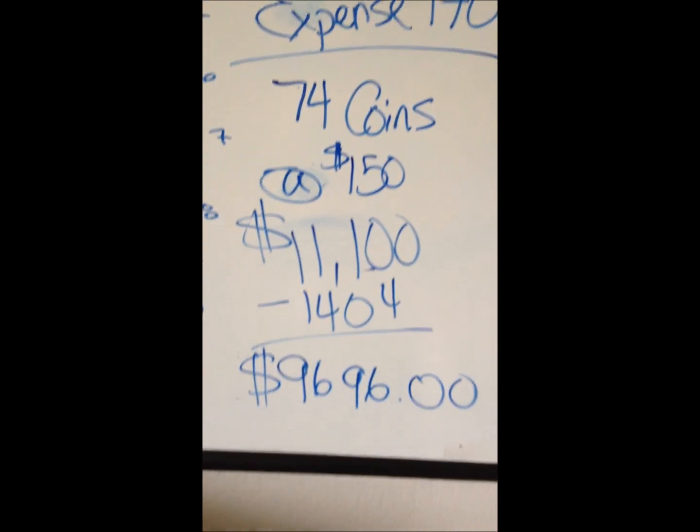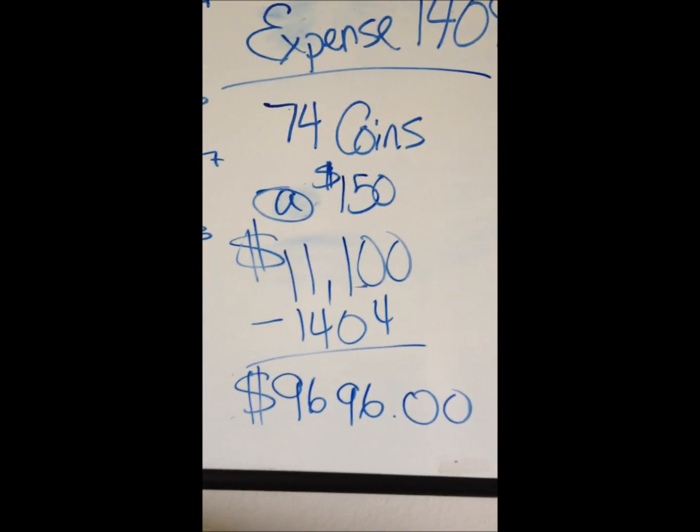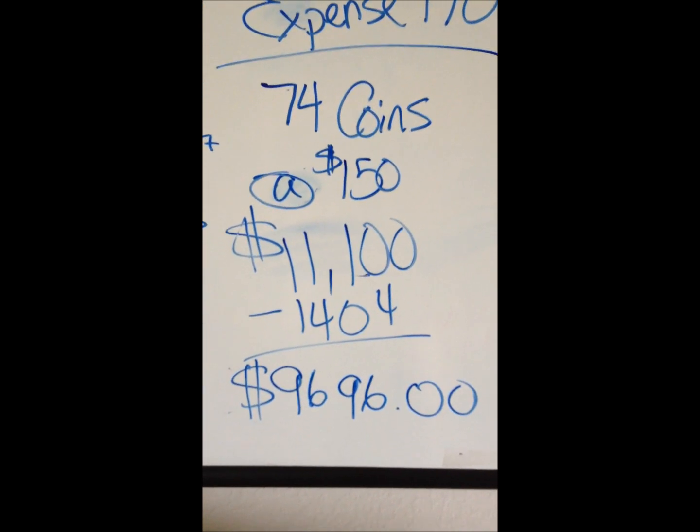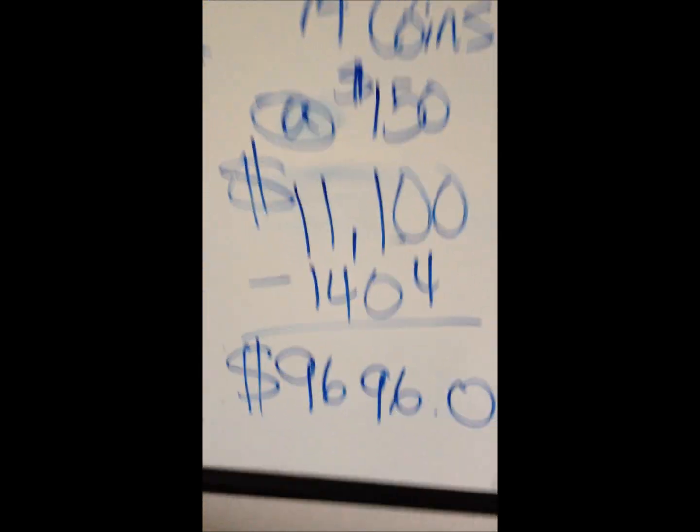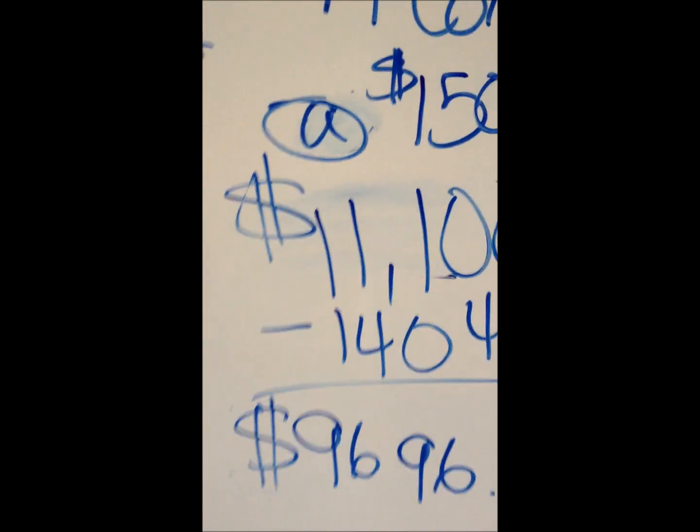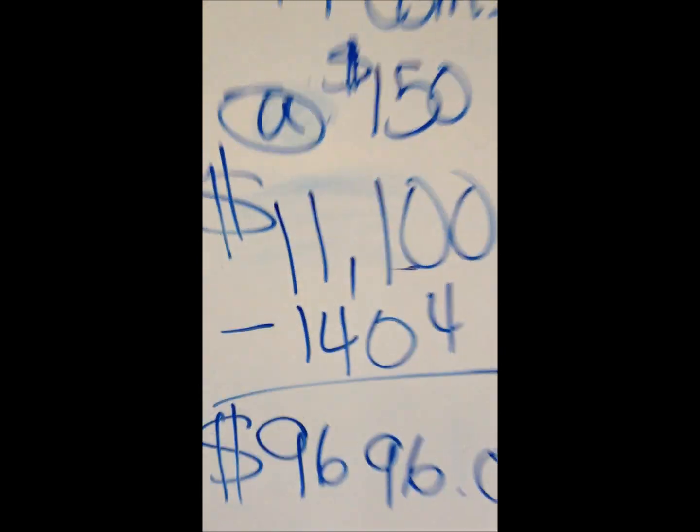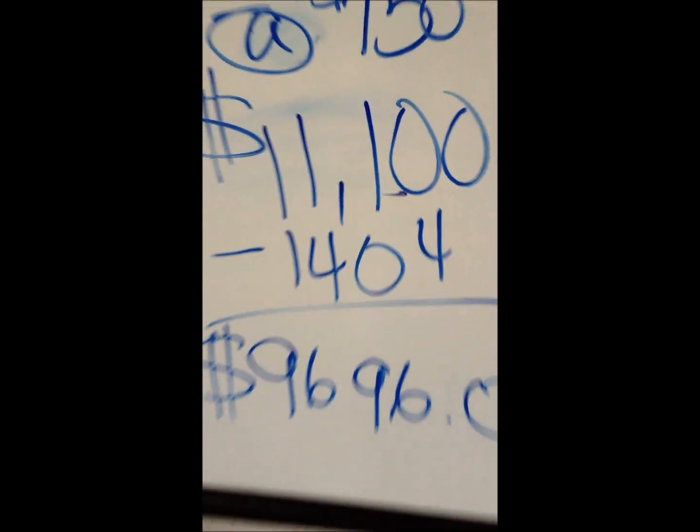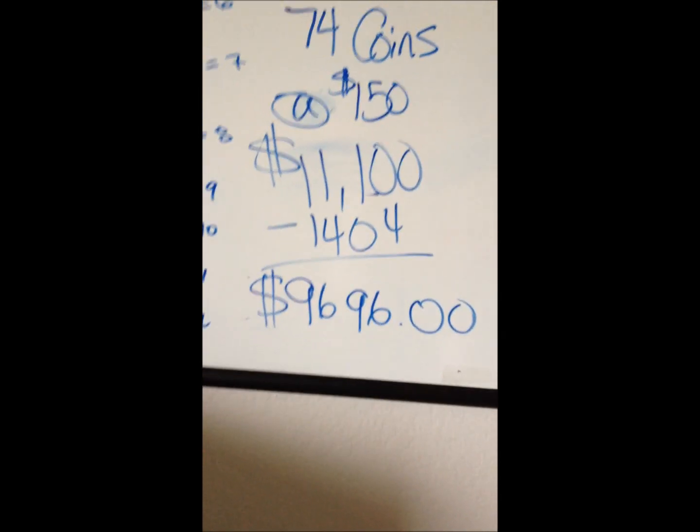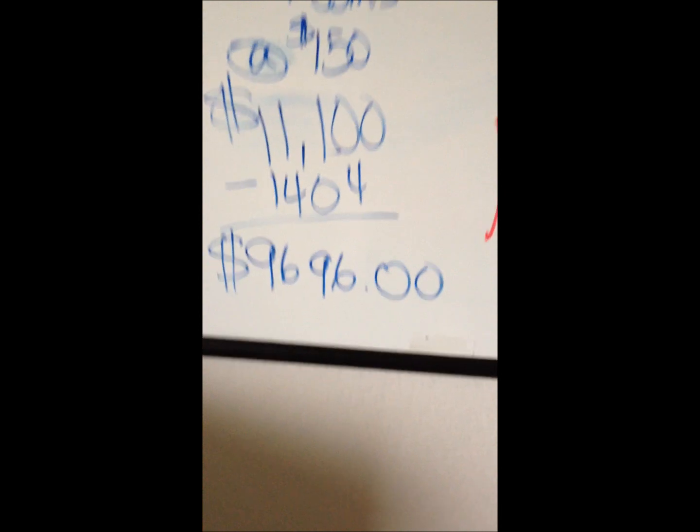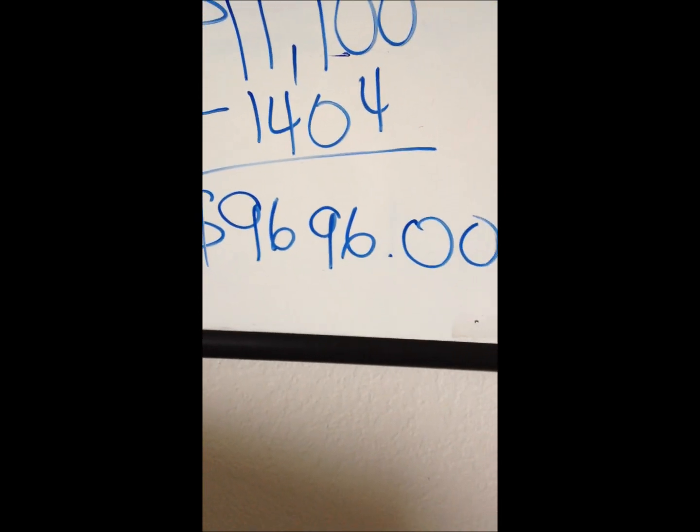That's going to be $11,100. You put out of pocket fourteen hundred and four dollars. That gives you a grand total of silver assets, the grand total of your silver assets will be nine thousand six hundred ninety-six dollars. Did you get that? Nine thousand six hundred ninety-six dollars. You only paid $1,404.